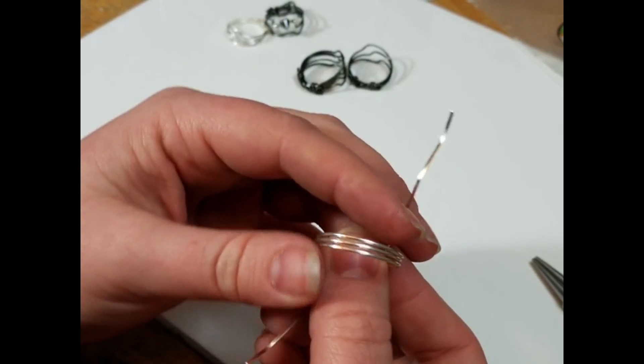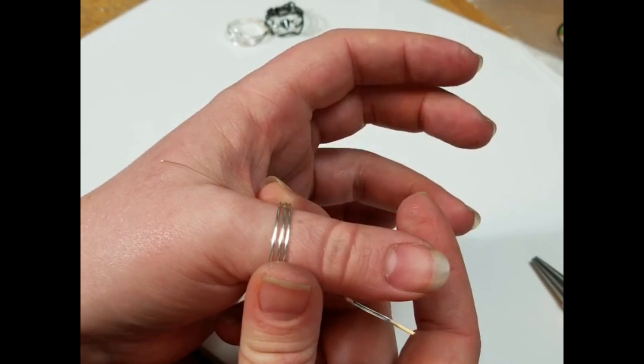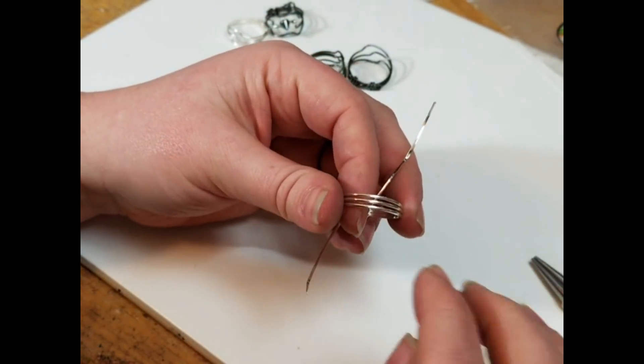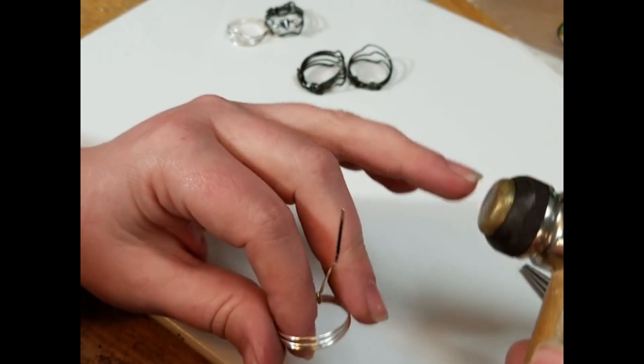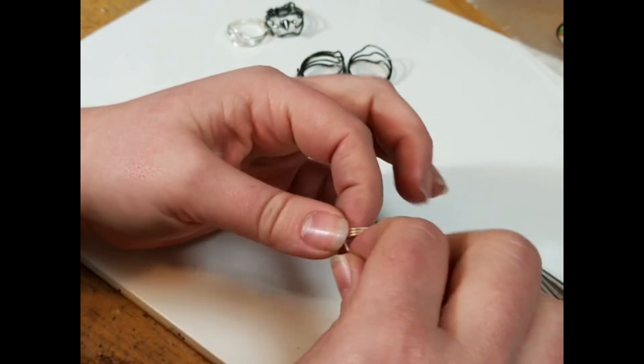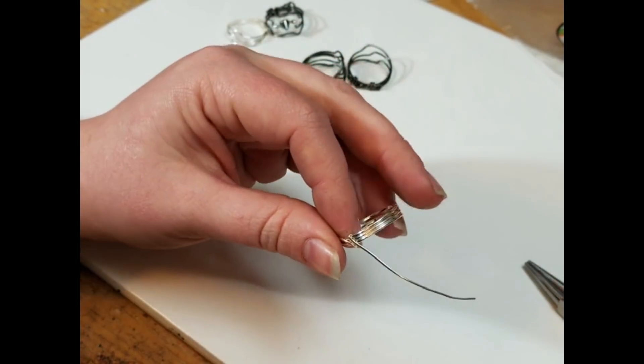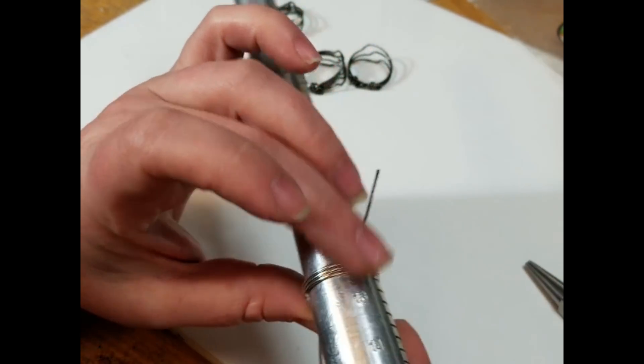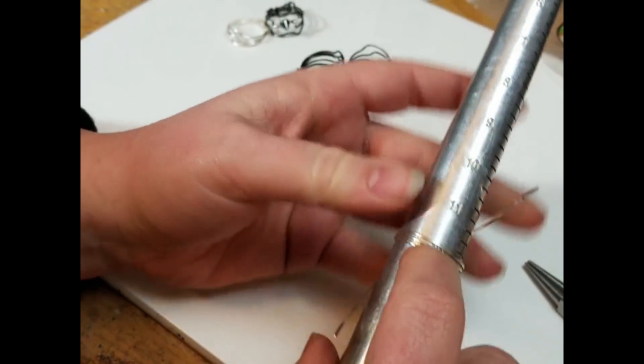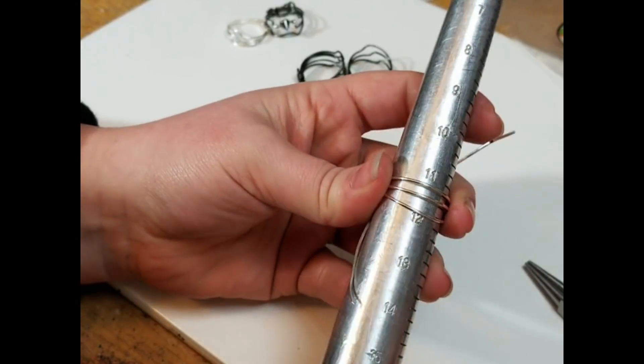And honestly, you could just leave it like this, just a very simple, some folks really like the way that something like that looks, very simplistic. You could also take it from here and hammer it with the brass end of your hammer and get a really nice hammered metal look. But what I'm going to do is put this on our ring mandrel.